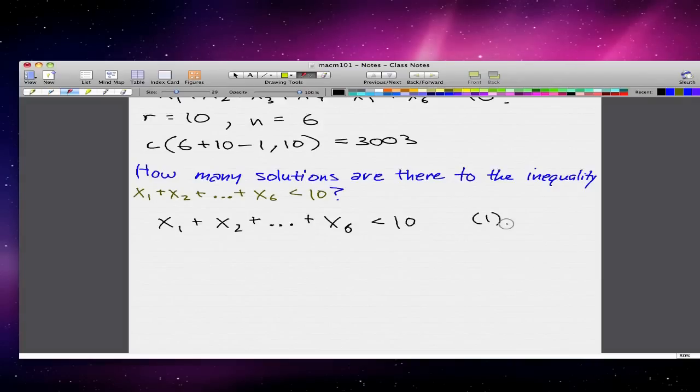x1 plus x2... Just copying this equation down is the first thing that we'll do. It's the first thing I always do for all my tests as well. So this is our first equation. It's pretty much a copy of this equation. This corresponds to the second equation that we're going to write: x1 plus x2 plus all the way to x6 plus x7 equals 10.